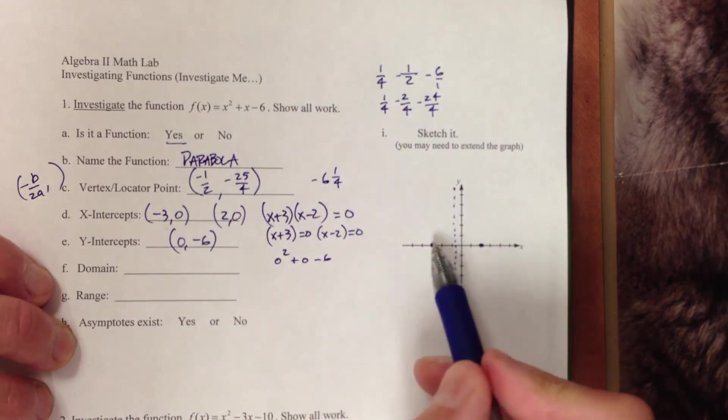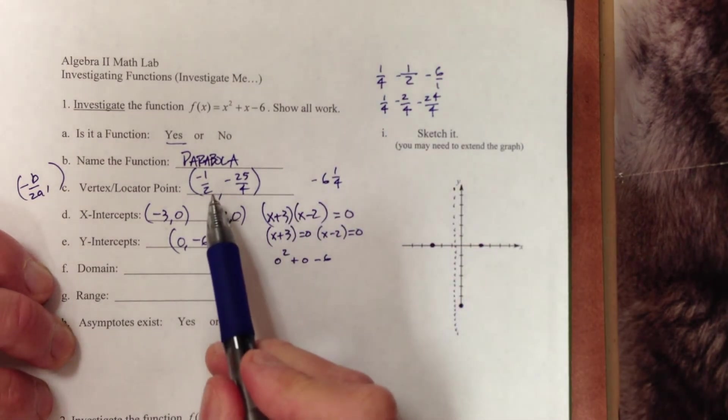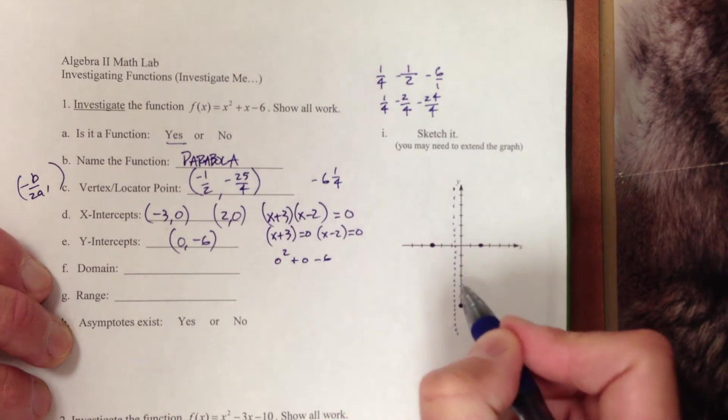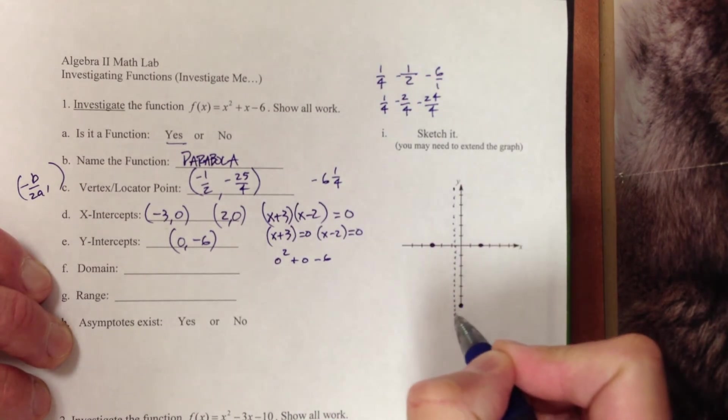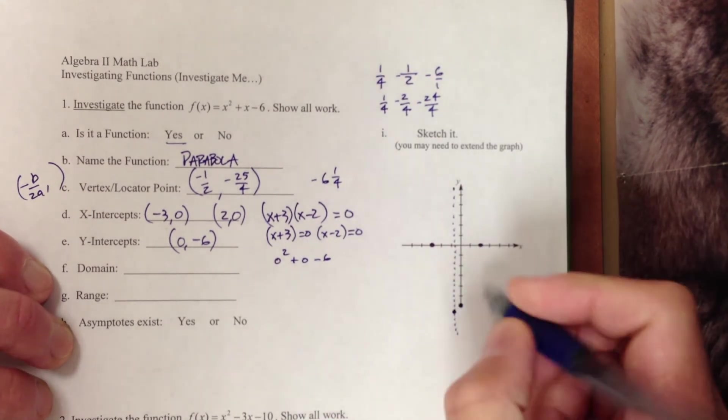If we convert that to a mixed number, we will get negative 6 and a quarter. That is, those are the coordinates of my vertex. So negative 1, 2, 3, 4, 5, 6 and a quarter. There you go. Center point.